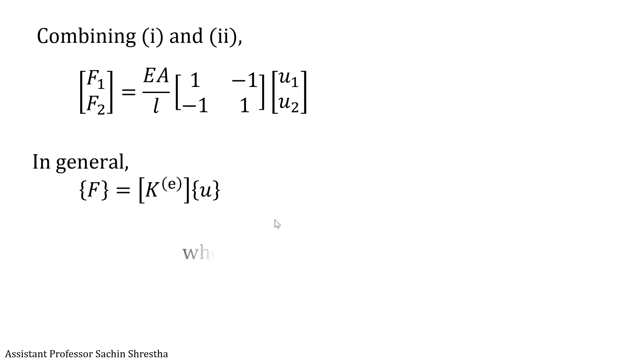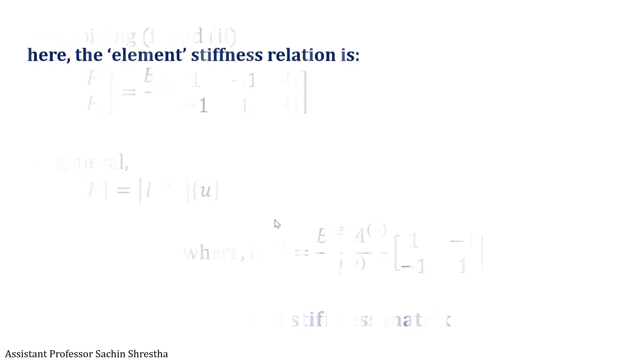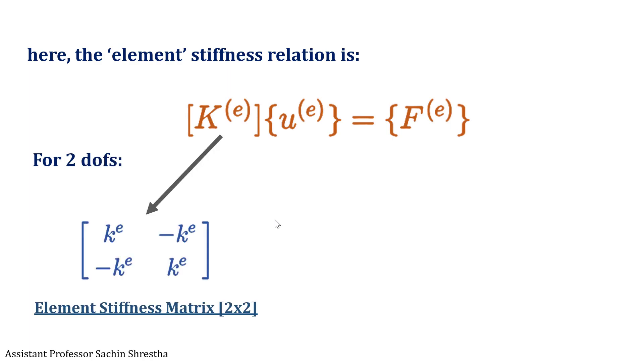Here, KE is basically the stiffness matrix and can be obtained as the equation shown. Rewriting the equation for the two degrees of freedom, KE represents the element stiffness matrix.